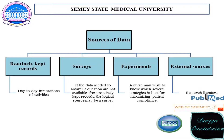I want to explain what kinds of sources of data exist. The first source is routinely kept records – the day-to-day transactions of activities. For example, many patients come to the polyclinic to check up their body. Every day, all information is gathered by medical staff using special statistical programs. If you have routinely kept records, you can easily calculate birth rate, death rate, incidence, and prevalence.